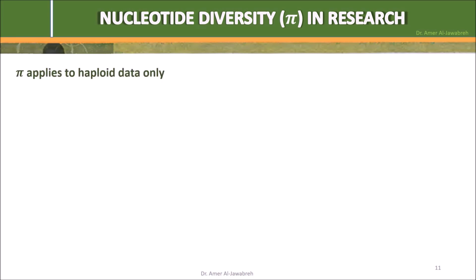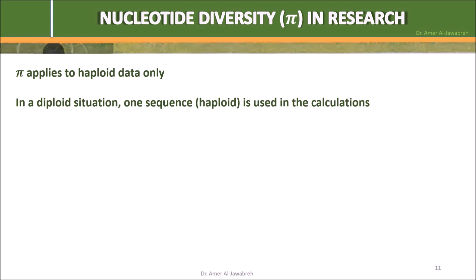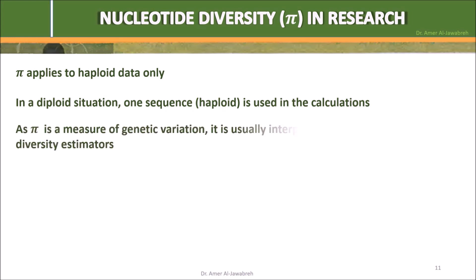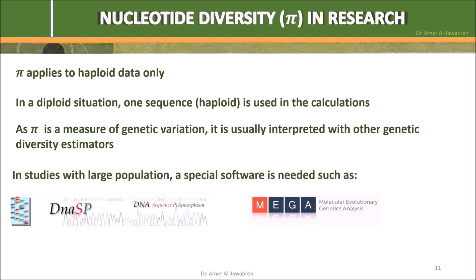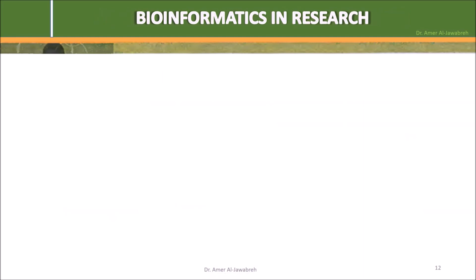Nucleotide diversity pi in research: pi applies to haplotype data only. In a diploid situation, one sequence per haploid is used in the calculations. As pi is a measure of genetic variation, it is usually interpreted alongside other genetic diversity estimators. In a large population, special software is needed, such as DNASP and MEGA.